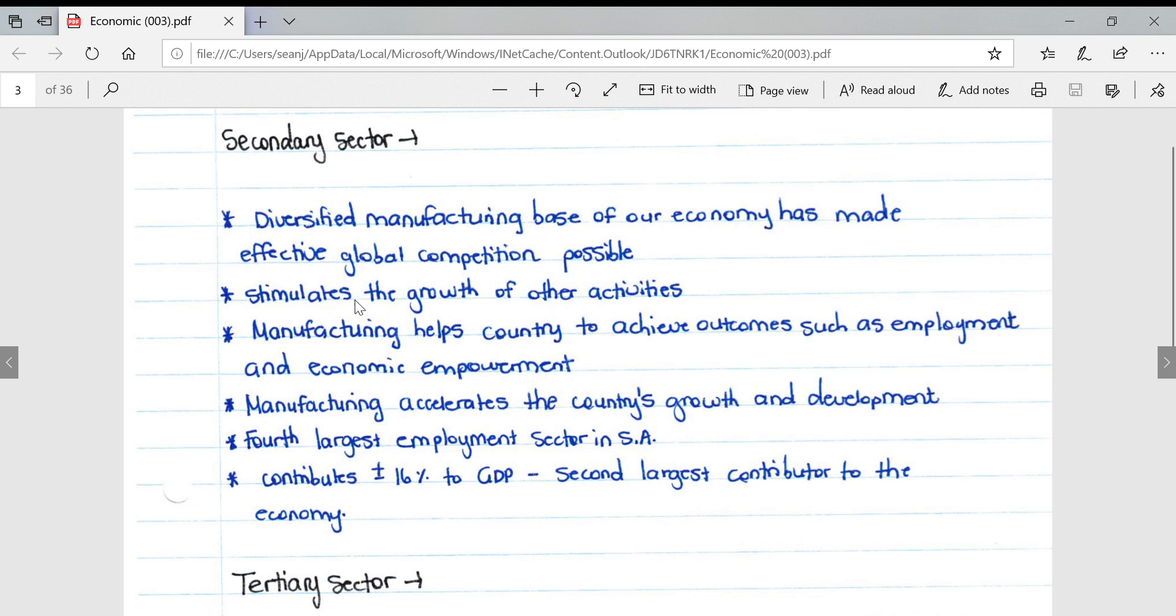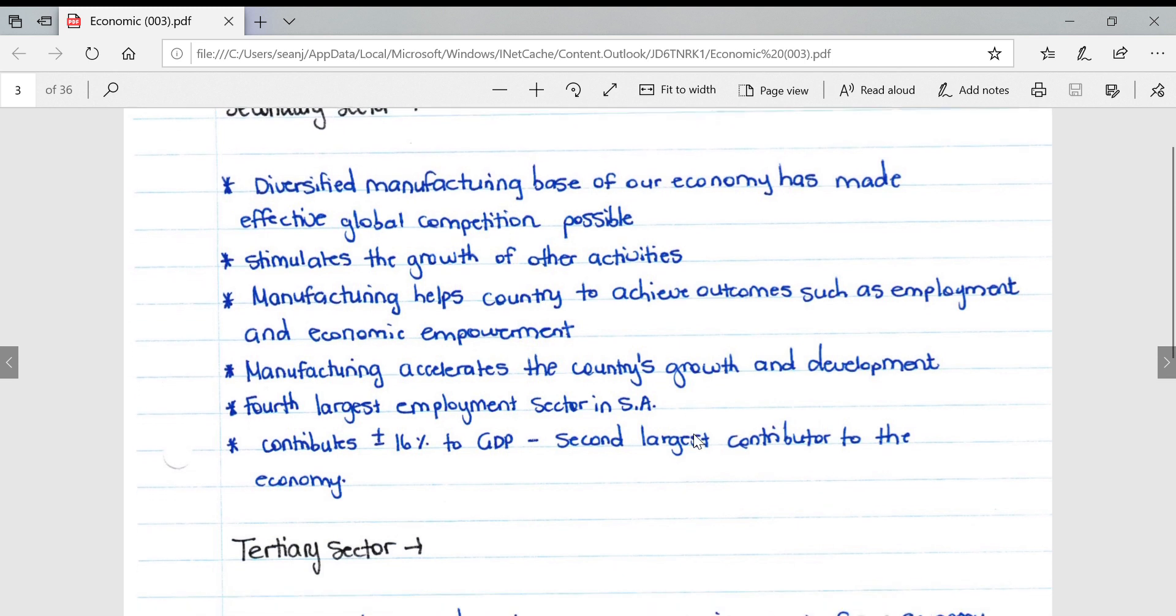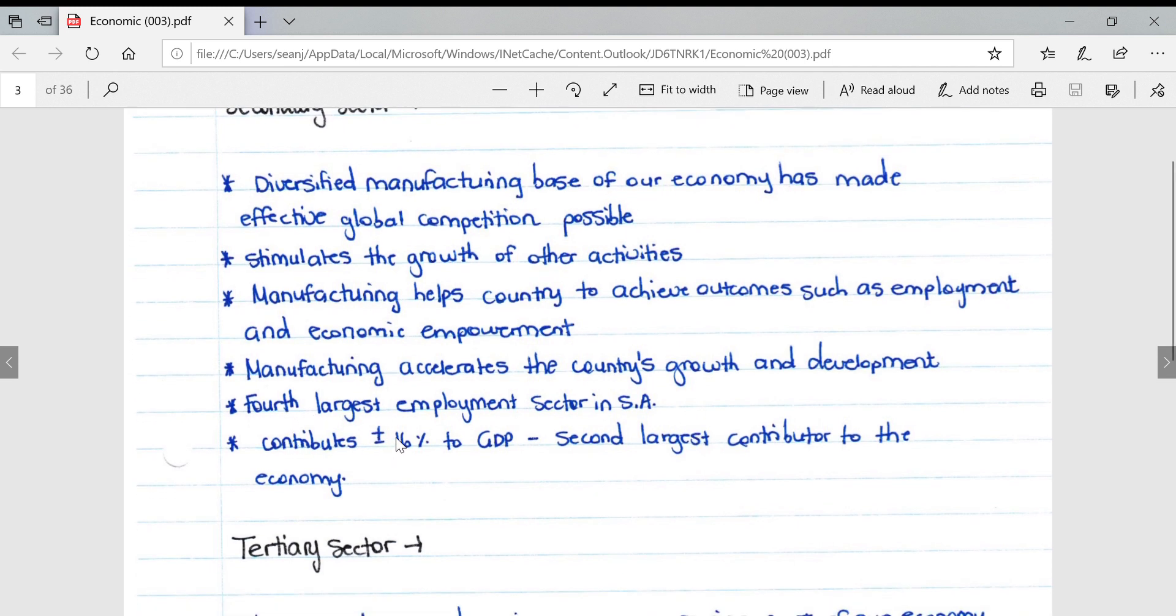The secondary sector has a diversified manufacturing base that has made effective global competition possible. It stimulates the growth of other activities, helps achieve outcomes such as employment and economic empowerment, and accelerates the country's growth and development. It's the fourth largest employment sector in South Africa, contributing plus minus 16% to the GDP - the second largest contributor to the economy.